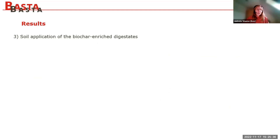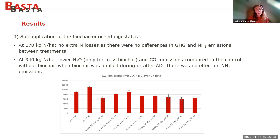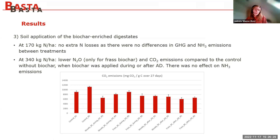When we added all those different digestates to the soil at a dose of 170 kilograms per hectare, we saw no difference between treatments with or without biochar — no extra nitrogen losses with biochar treatments. We repeated the experiment with a double nitrogen dose of 340 kilograms per hectare, and then we saw lower N2O emissions for the frass biochar, whether added during or after digestion. For both biochars, lower CO2 emissions compared to the control. The graph shows CO2 emissions for the different treatments. There were no effects on NH3 emissions.